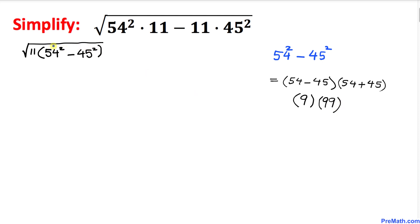Now let's revert back to our original problem. We are going to replace this part by this simplified one, 9 times 99. Here we got our square root, and then I'm going to just copy it down: 11 right up here, and times this quantity, which is 9 times 99.